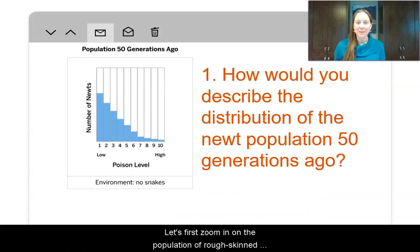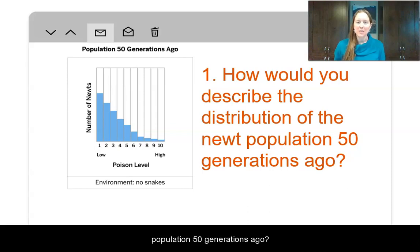Let's first zoom in on the population of rough-skinned newts 50 generations ago. On whatever you're recording on or with whoever you're talking with, how would you describe the distribution of the newt population 50 generations ago?